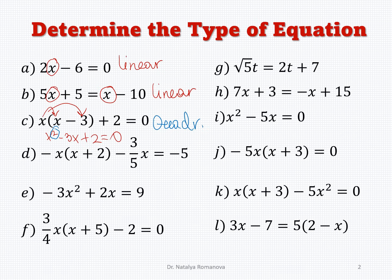Next: negative x times (x plus 2) minus 3/5 x equals negative 5. The same situation — you have a product x times x, which gives you x squared. So the highest value of the exponent equals 2; it is also a quadratic equation.